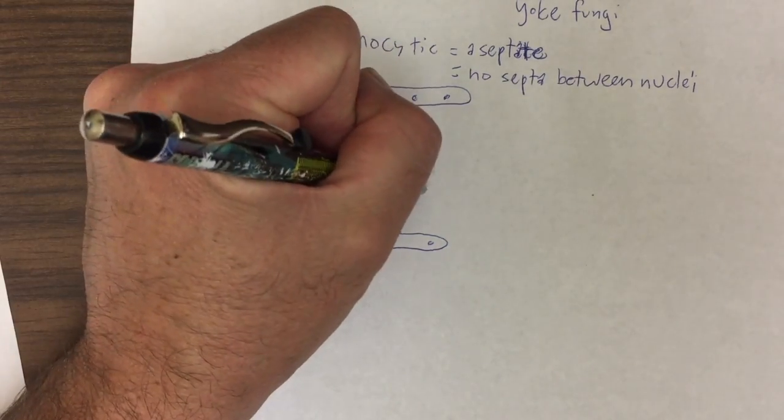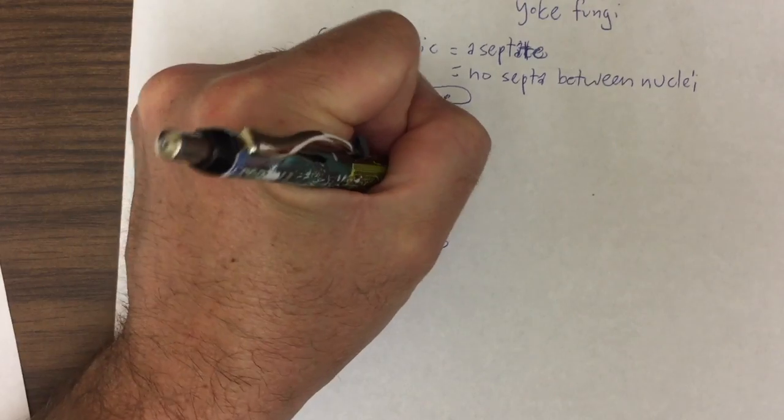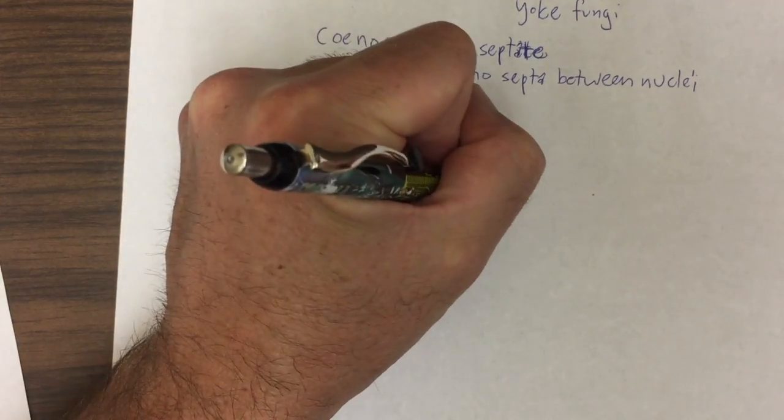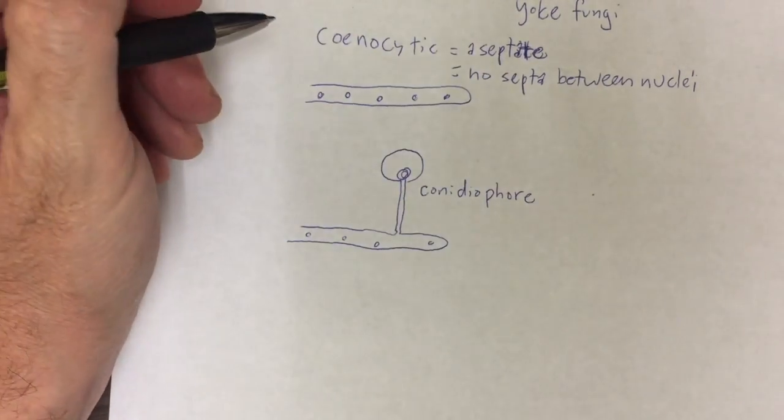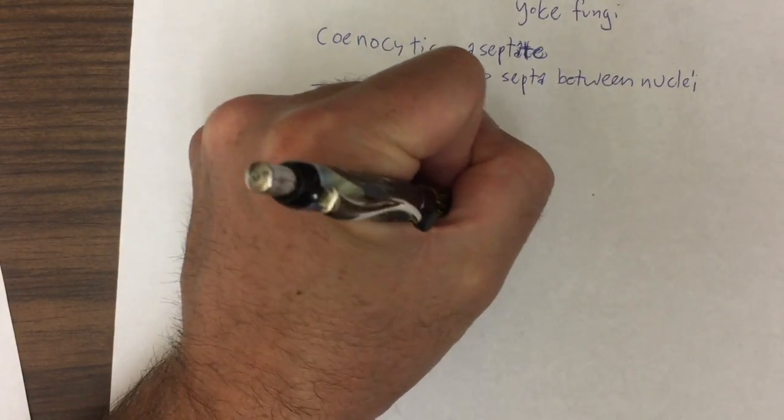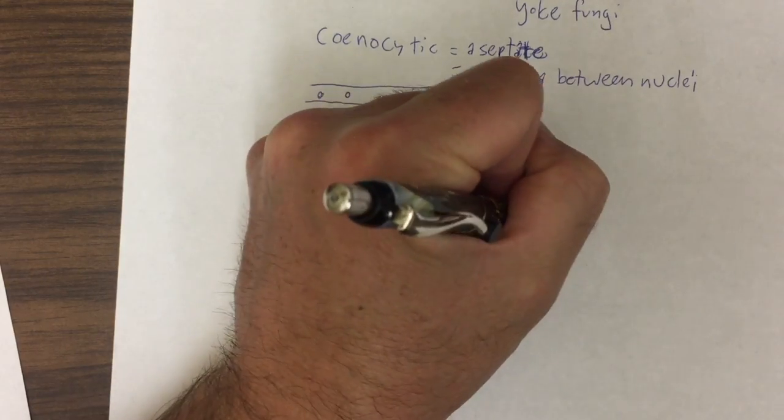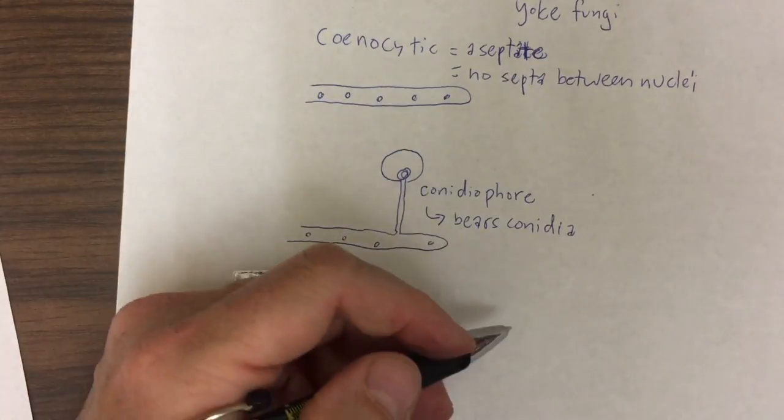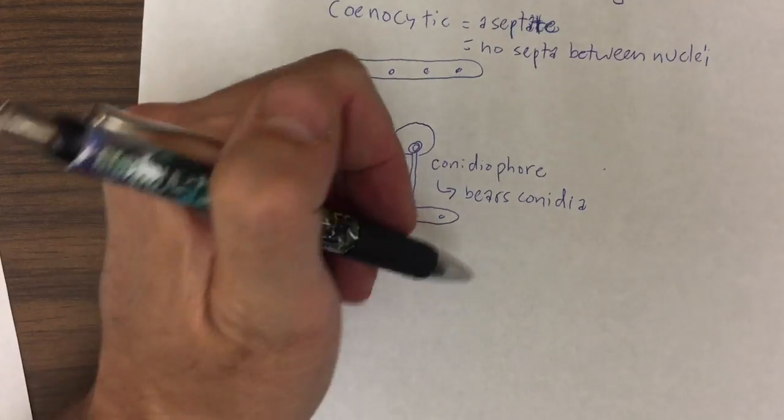a zygomycete may produce a conidiafore, which is a structure that bears conidia.